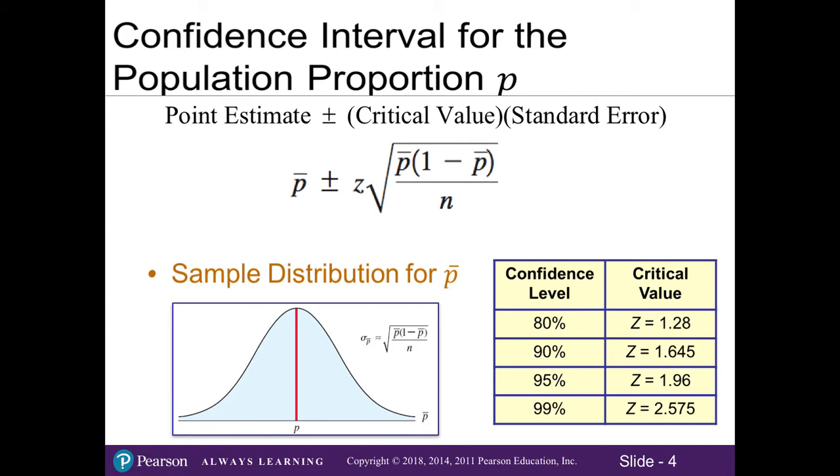The nice thing with proportions is that we only have one version we have to learn and it's only going to use the critical z value and it's the same z values that we've seen in our commonly used table before. You do not ever have to worry about t values when it comes to proportions. So we only have to learn one way of calculating the confidence interval, whereas the sample mean had two ways depending on whether or not you need the population standard deviation.